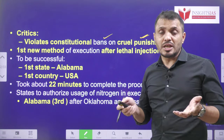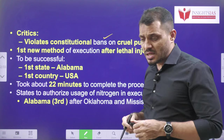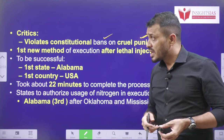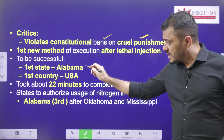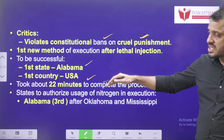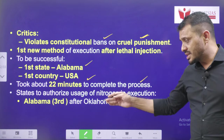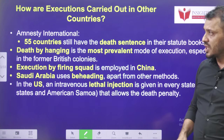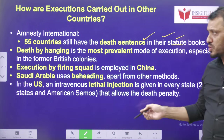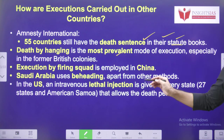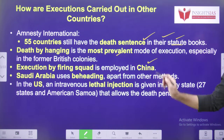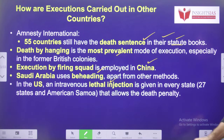The person experiences those last moments of life for those 20 to 25 minutes, and some people are suggesting that it is very painful. Alabama is going to be the third state authorized to use nitrogen hypoxia but the first state to execute; the other authorized states are Oklahoma and Mississippi. According to Amnesty International, around 55 countries have the death sentence in their statutes. Death sentence by hanging is the most prevalent, especially in former British colonies like India and Commonwealth countries. Execution by firing squad is used in China, beheading in Saudi Arabia, and lethal injection mainly in America.